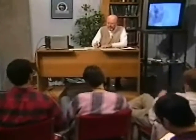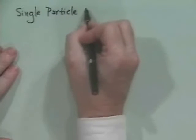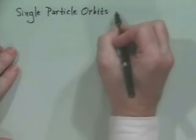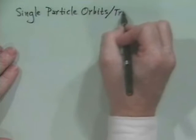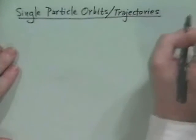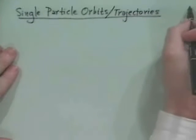What we're into is single particle orbits — or we sometimes use the word trajectories. Trajectories is probably better terminology, although they are a sort of helical orbit.